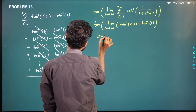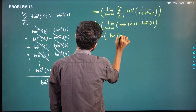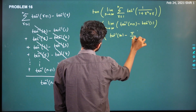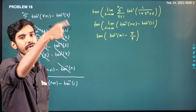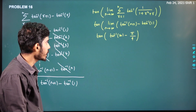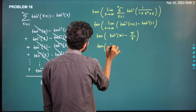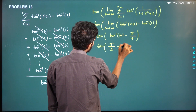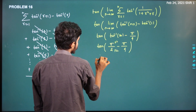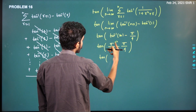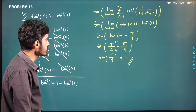So tan inverse of infinity is pi by 2, and tan inverse of 1 is pi by 4. So the expression becomes tan of (pi by 2 minus pi by 4), which equals tan of pi by 4, and so the required answer is 1.